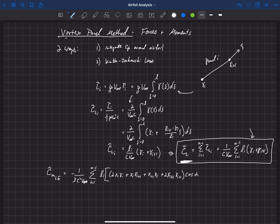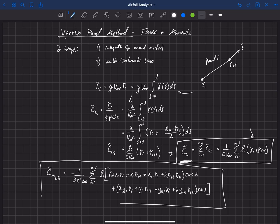And then inside of the bracket still plus 2yi gamma i plus 2yi gamma i plus yi gamma i plus 1 plus yi plus 1 times gamma i plus 2yi plus 1 gamma i plus 1 times the sine of alpha. And we close that bracket there. Okay, so this is the equation for the pitching moment about the leading edge of the airfoil.